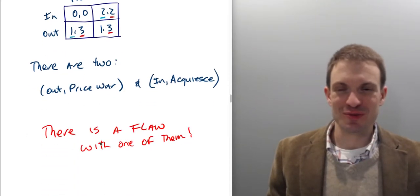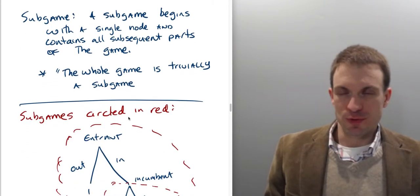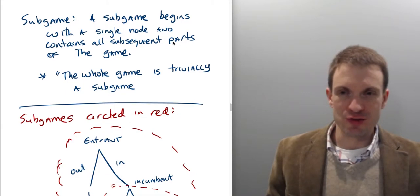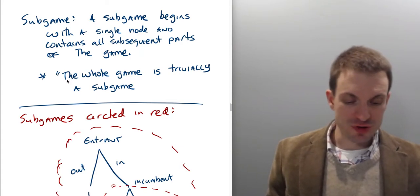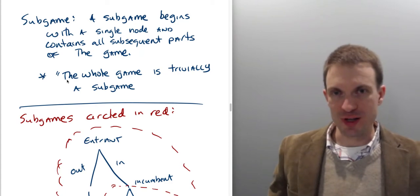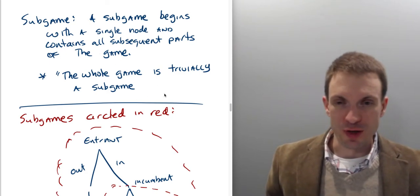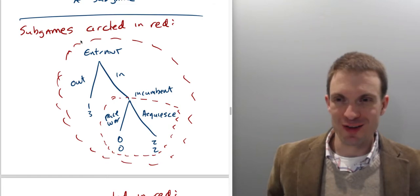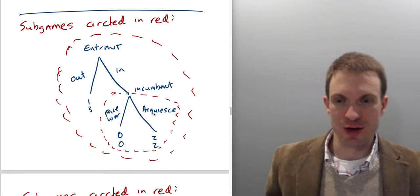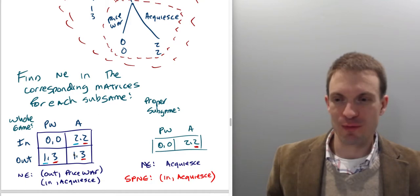There's a flaw with one of them — one is not sequentially rational. Recall that a sub-game begins with a single node and contains all subsequent parts of the game; you can't cross information sets. I've circled the sub-games in red: the whole game and the proper sub-game at the incumbent's node. Sub-game perfect Nash equilibrium requires Nash play in all sub-games.